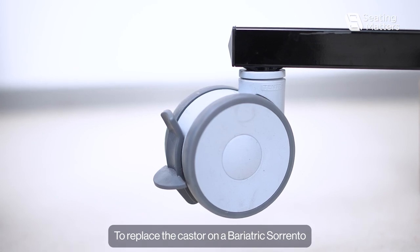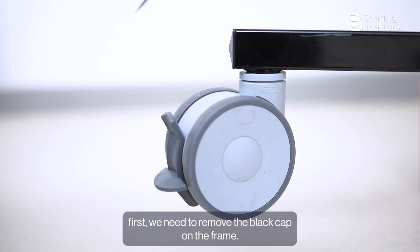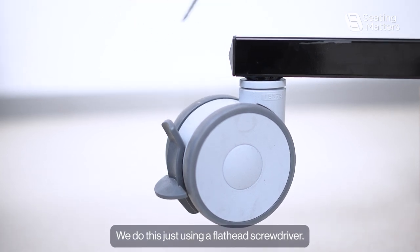To replace the caster on a bariatric Sorrento, first we need to remove the black cap on the frame. We do this just using a flat head screwdriver.